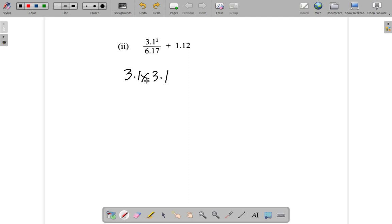Then it says divided by 6.17. You might think of it as being this, and then you go to your calculator and do that—no problem. Then you have plus 1.12.